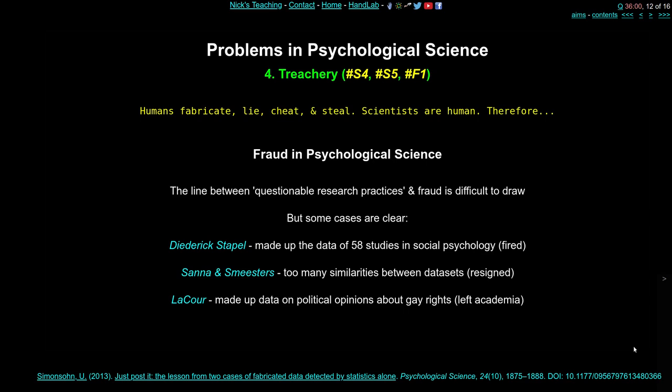Diederik Stapel is a classic case from around 2011–2012. He was a social psychologist who had made up the data for 58 different studies and articles. He published 58 papers in which most data are suspect, and he admitted to this — he even wrote a book about it. He would sit at home or in his lab simply making up numbers. He lost his job, was fired, and was prosecuted, receiving a suspended prison sentence. It's illegal because it constitutes fraud: misusing public funds, making false claims, breaking copyright agreements.